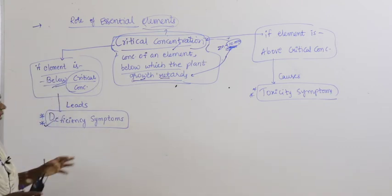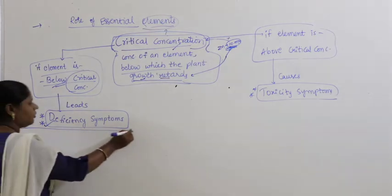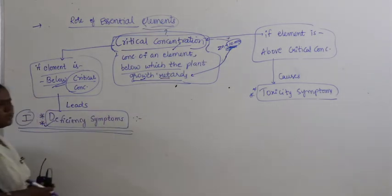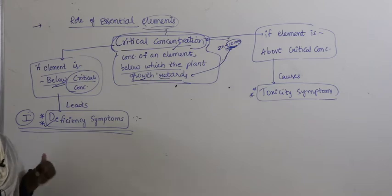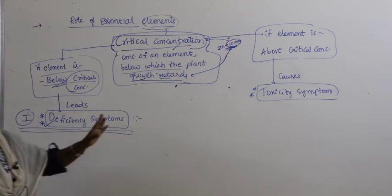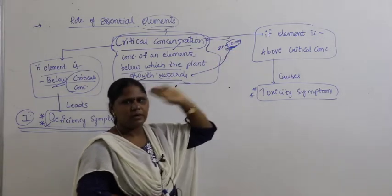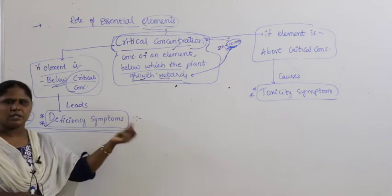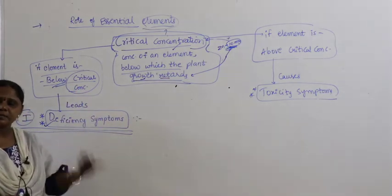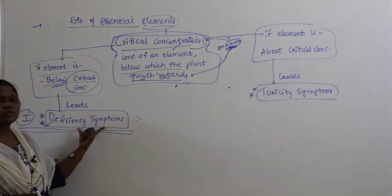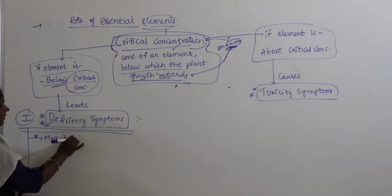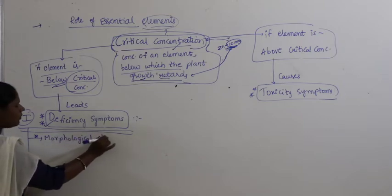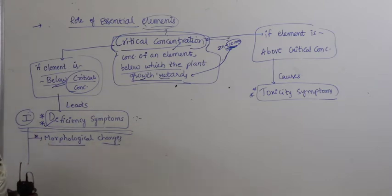Let us study deficiency symptoms. How do you identify that a plant is deficient in some element? For example, if zinc required is 10 milligrams but the plant has only 3 milligrams, how does the plant express deficiency symptoms? Most commonly through morphological changes — you can see some external changes immediately, which are morphological changes.